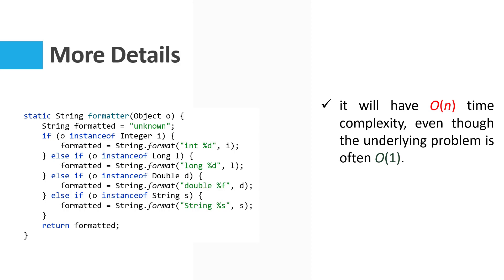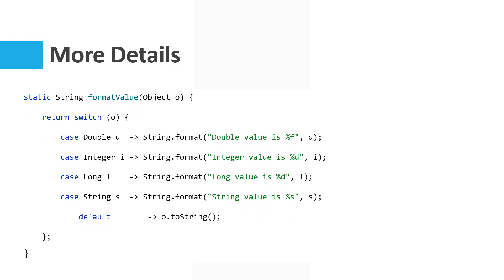But switch is a perfect match for pattern matching. If we extend switch statements and expressions to work on any type and allow case labels with patterns rather than just constants, then we could rewrite the above code more clearly and reliably. The semantics of this switch are clear: a case label with a pattern matches the value of the selector expression O if the value matches the pattern. The intent of this code is clearer because we are using the right control construct — we are saying the parameter O matches at most one of the following conditions; figure it out and evaluate the corresponding arm. As a bonus, it is optimizable — we are more likely to be able to perform the dispatch in O(1) time.